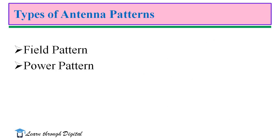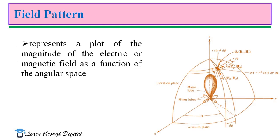Generally, there are two types of antenna patterns: field pattern and power pattern. Field pattern represents a plot of the magnitude of the electric or magnetic field as a function of angular space. This figure illustrates the radiation pattern of an antenna placed at the centre of a spherical coordinate system. Generally, we consider the spherical coordinate system for convenient analysis.